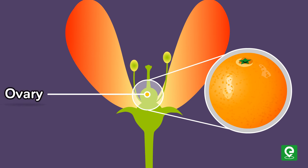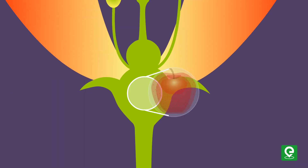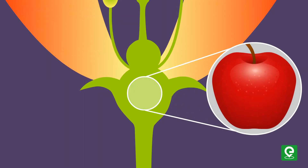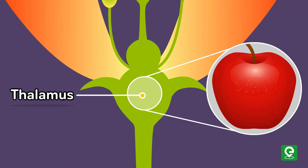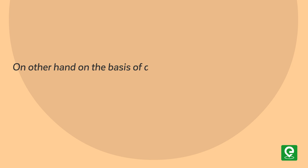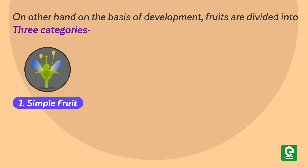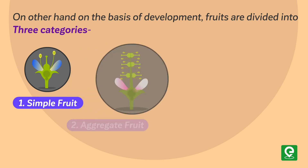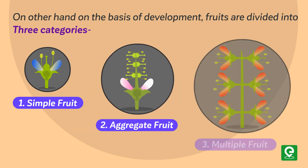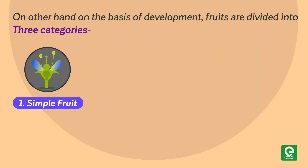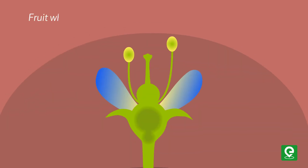If a fruit is formed from other parts of the plant, such as the thalamus and receptacle, then they are called false fruits. On the basis of development, fruits are divided into three categories: number one, simple fruit; number two, aggregate fruit; number three, multiple fruit.